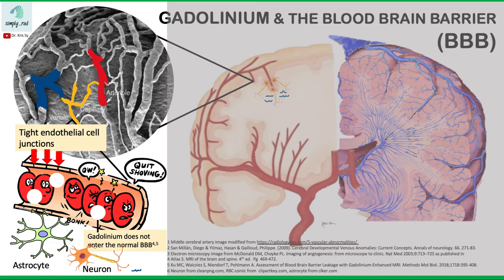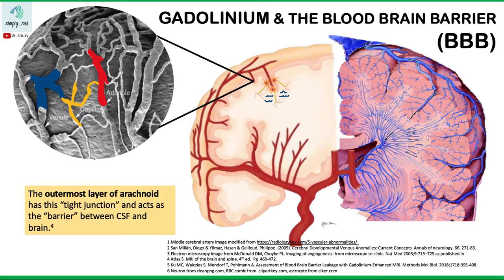Tight junctions mean a barrier, and this tight junction is also seen in the arachnoid layer. Intact tight junctions plus intact astrocyte foot processes means no entry for the gadolinium into the interstitium.